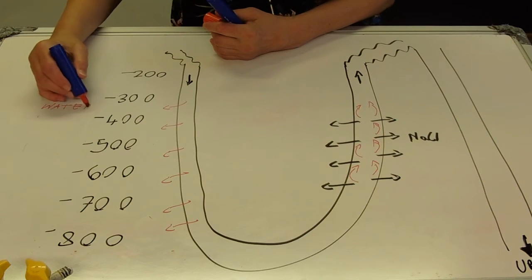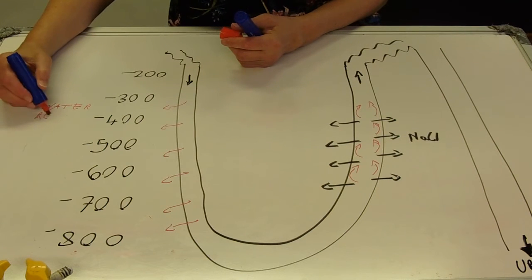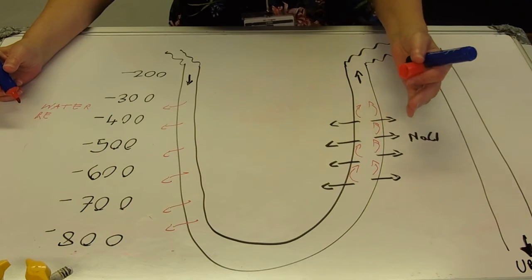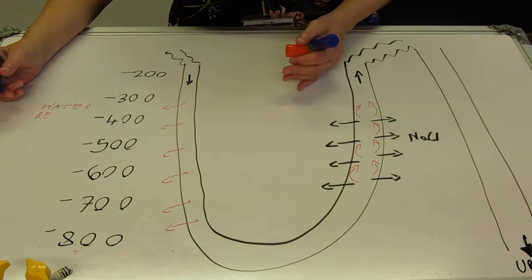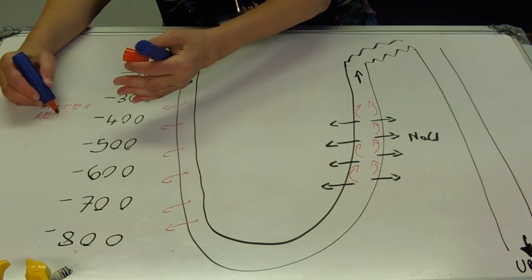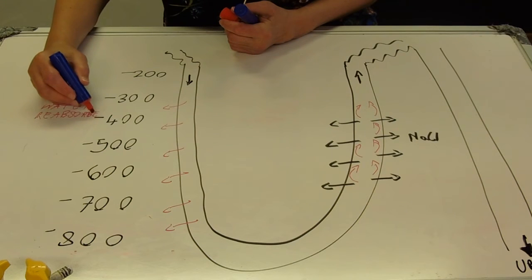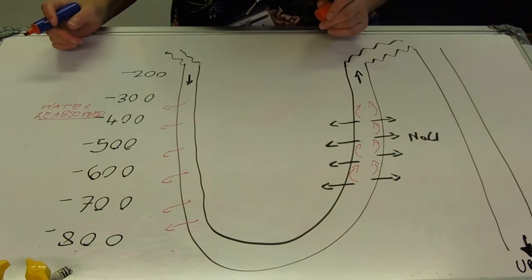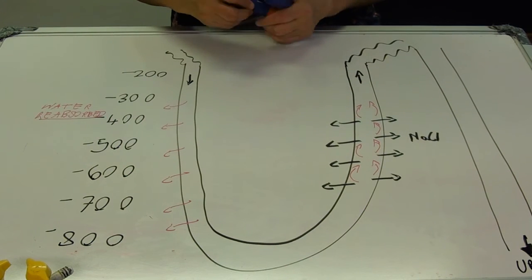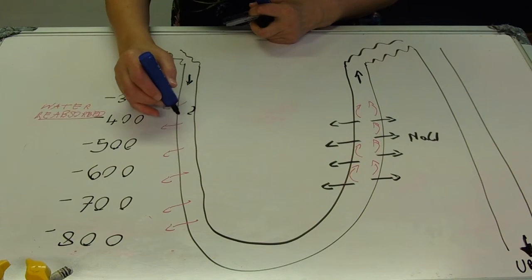So the descending limb is permeable to water and so water is reabsorbed. So it always seemed a bit, I think when I was your age, it always seemed a bit counterproductive, really. You spend all this energy, this ATP, making the water potential lower and then you put some water into it. But remember, that's just going to be really rapidly removed by those vasa recta kidneys. So we say that it's reabsorbed, which implies that it's going into the blood. Nothing happens to the salt there. The salt is going to stay in the tube.